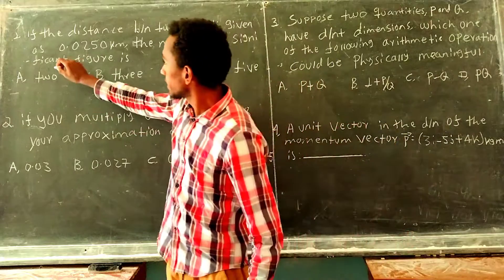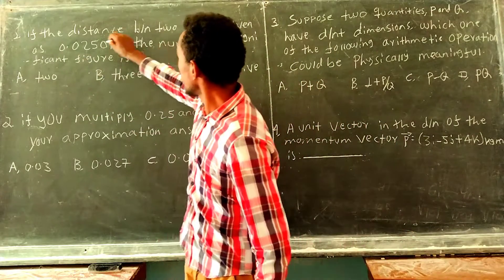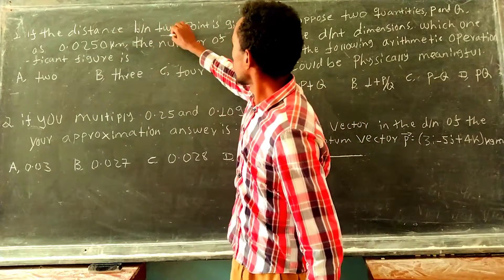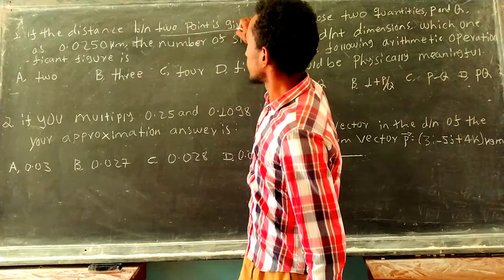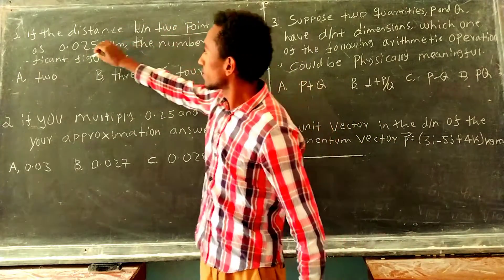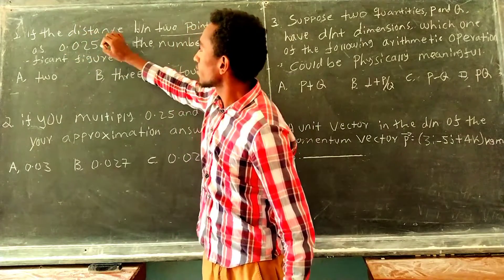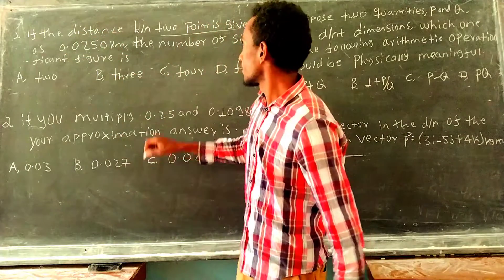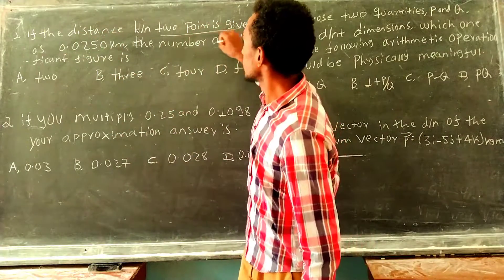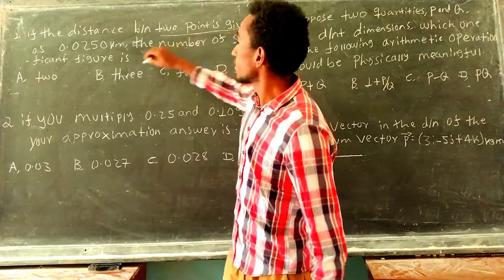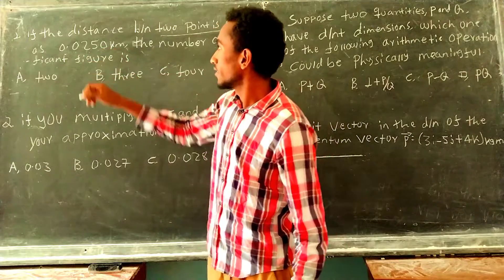If the distance between two points is given as 0.050 km, then the number of significant figures is?